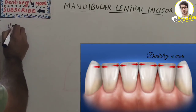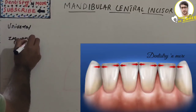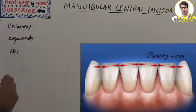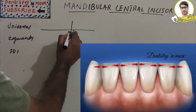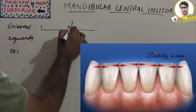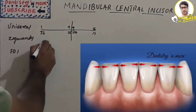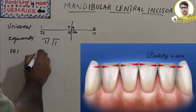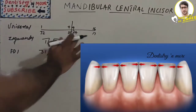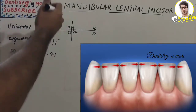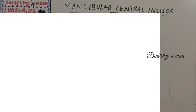We'll look at the notation systems: the Universal system, the Zsigmondy-Palmer system, and the FDI system. In the Universal system, the mandibular central incisors are numbered 24 and 25. In the Zsigmondy-Palmer system, it is 1 and 1. In the FDI system, it is 3-1 and 4-1, representing the left lower and lower right quadrants respectively, where 1 denotes the central incisor.